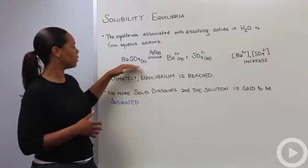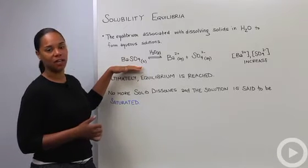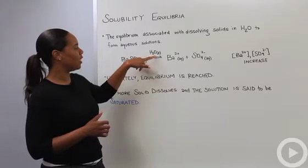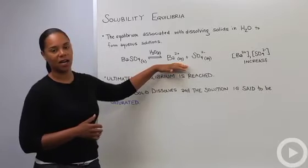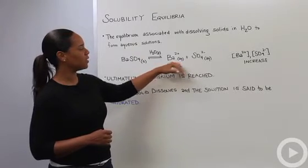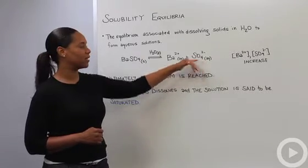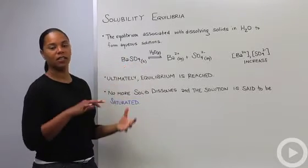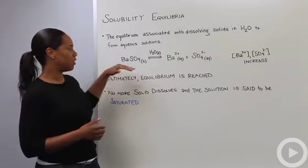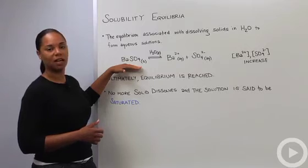Let's look at a specific example. Barium sulfate as a solid, if you dissolve it in water, will break up into the ionic species of Ba²⁺ and SO₄²⁻. Initially when you put the solid in water, it's not going to dissolve right away. You still have quite a bit of barium sulfate solid left.